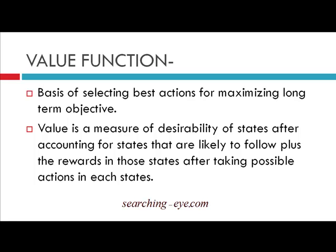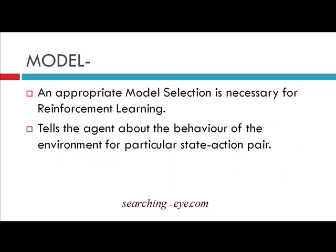While a reward tells the agent what is best in the present state, the value function informs the agent to take particular actions that will help in maximizing future rewards — it tells the agent what is best in the long term. The value function is something an agent learns, and the agent's primary objective is to maximize it. A model tells the agent about the behavior of the environment for a particular state-action pair and is very important for reinforcement learning.